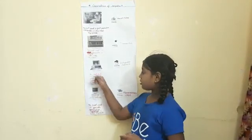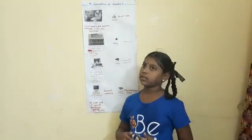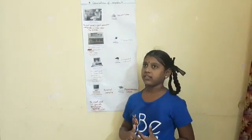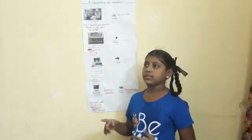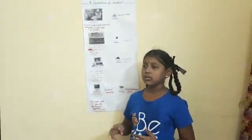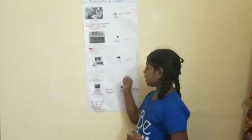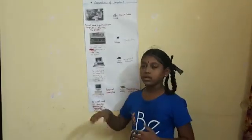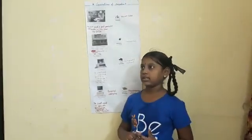3rd generation of computers. The 3rd generation of computers time period is 1965 to 1970. The part used in 3rd generation computers is integrated cell tubes. It is also called as IBM 360.